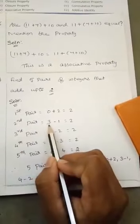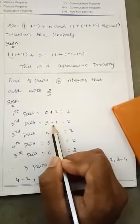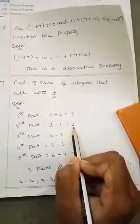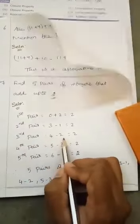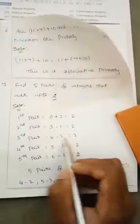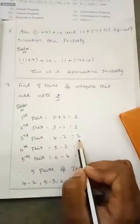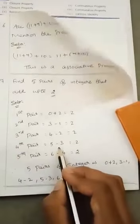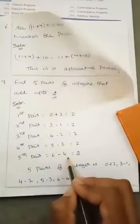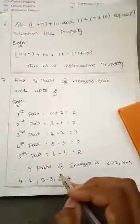Second pair is 3 minus 1. We are going to subtract these two numbers. 3 minus 1 is 2. Third pair is 4 minus 2 is equal to 2. We are going to subtract 4 minus 2 is 2. Fourth pair is 5 minus 3. Subtract these two, 2. Fifth pair is 6 minus 4. These are the 5 pairs.